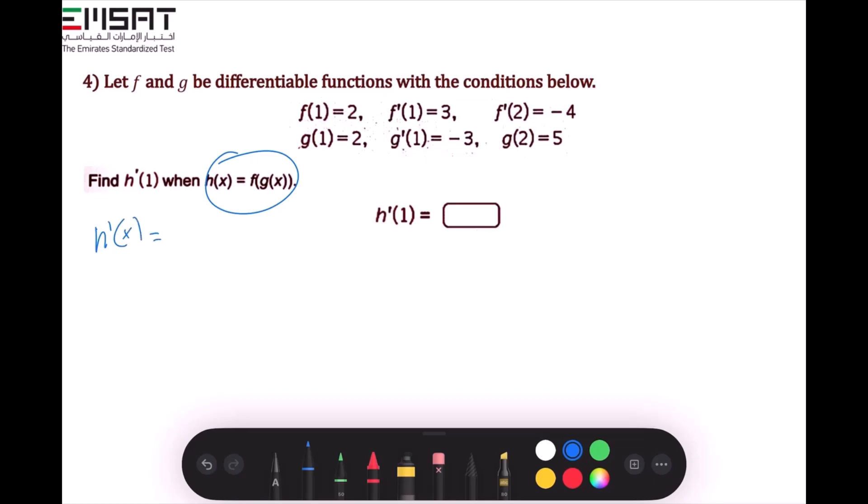It is equal to the derivative of f while leaving the inside, which is g of x, alone. And then it's going to be times the derivative of g of x. So as it's required here, we have the x is 1. So we replace the x's with 1. So it's going to be derivative of h of 1 equals f prime of g of 1, then times derivative of g of 1.